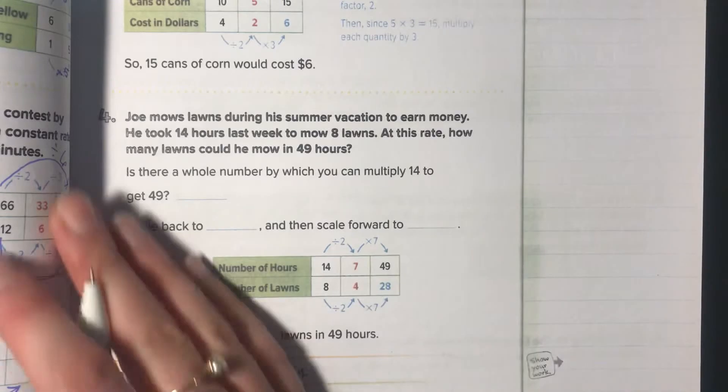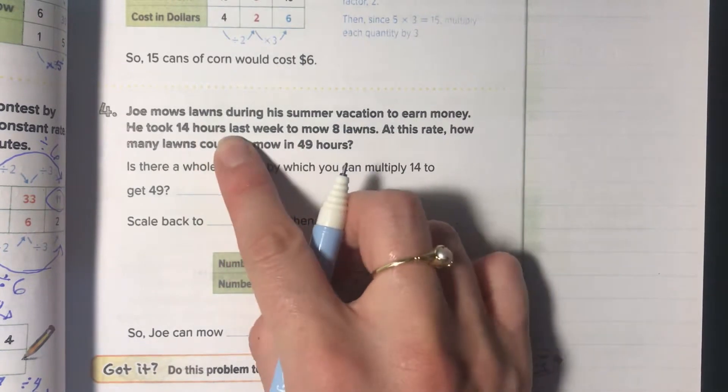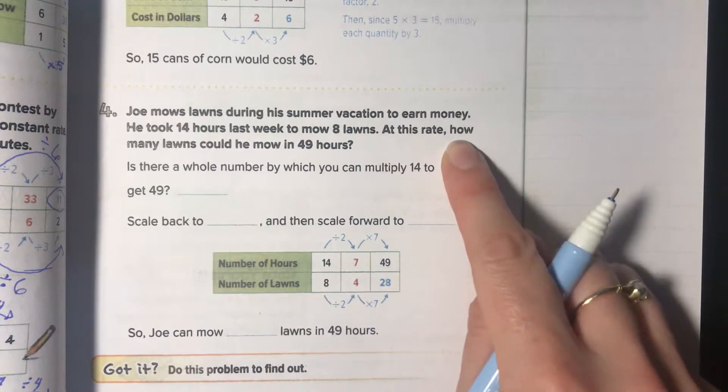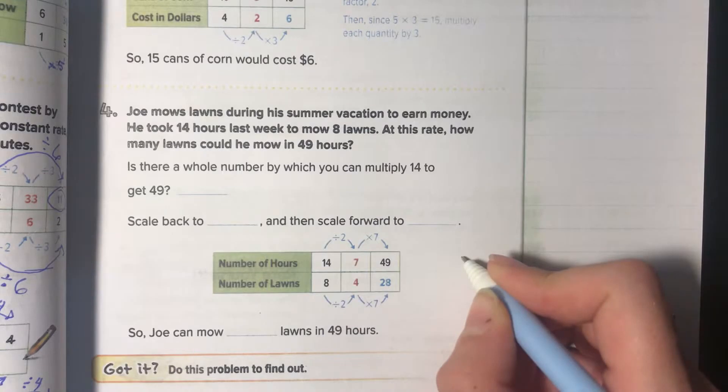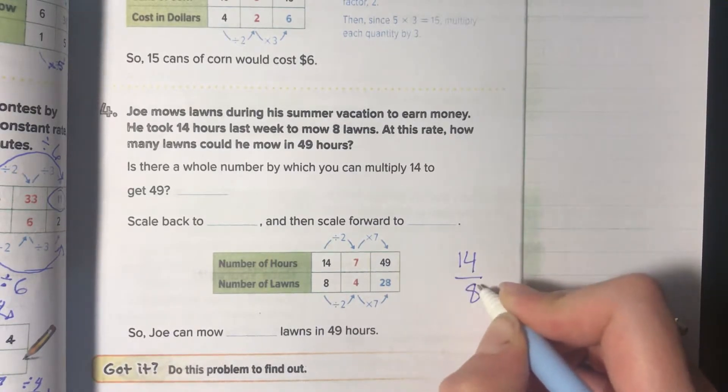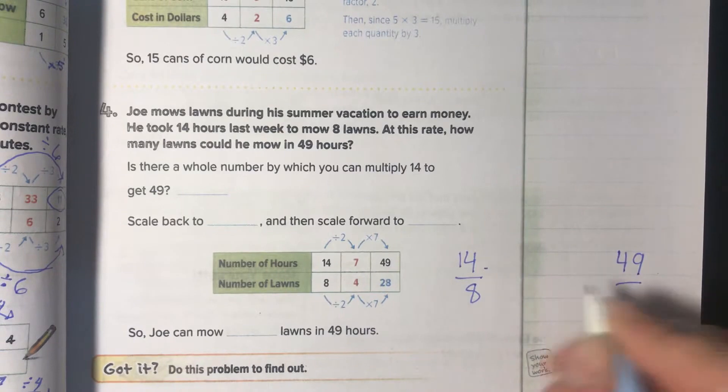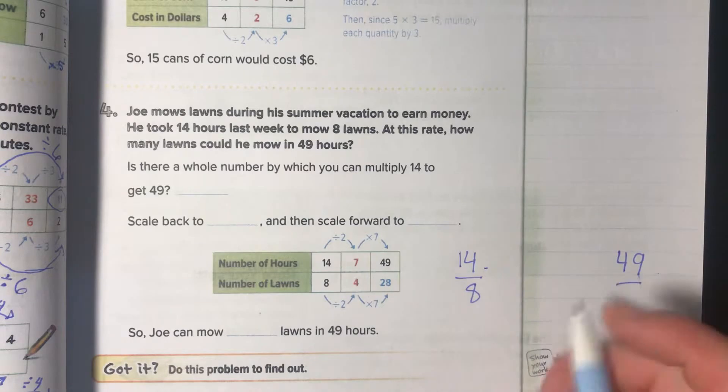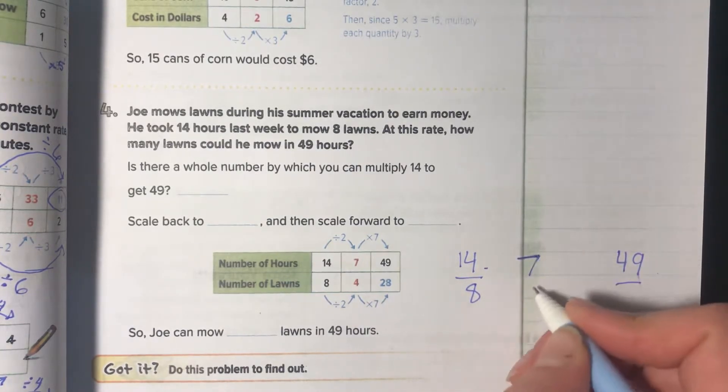Let's try it in this one. Joe mows lawns during his summer vacation to earn money. It took fourteen hours last week to mow eight lawns. At this rate, how many lawns could he mow in forty-nine hours? You have fourteen and eight, and you're trying to get to forty-nine. But forty-nine, fourteen, there's not an easy way to get to forty-nine. So we're going to scale. Pick a common factor. It doesn't even have to be the greatest common factor. Just a common factor. Seven. I know seven works with both fourteen and it works with forty-nine.